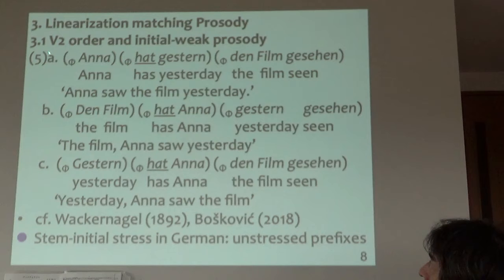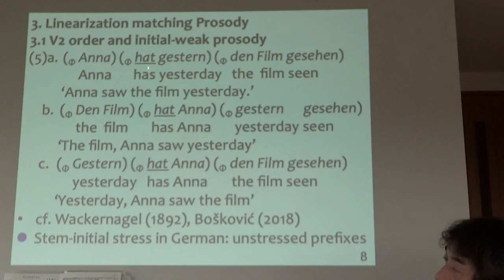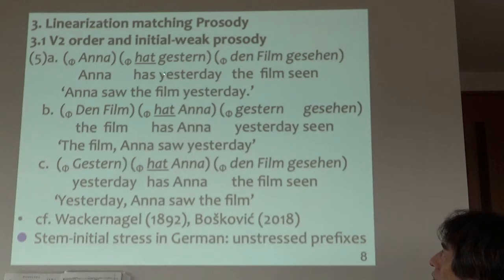Let's turn to the externalization analysis of V2. Looking at number 5, you see phonological phrases. Hat is weak because it is a finite auxiliary — it is weak, prosodically. Geshtan is strong; this is a content word. So, weak-strong. Hat occurs in the second phonological phrase. Film also: geshtan, hat, Ana — weak-strong. The initial weak is pointed out by Nager or Boskovic.